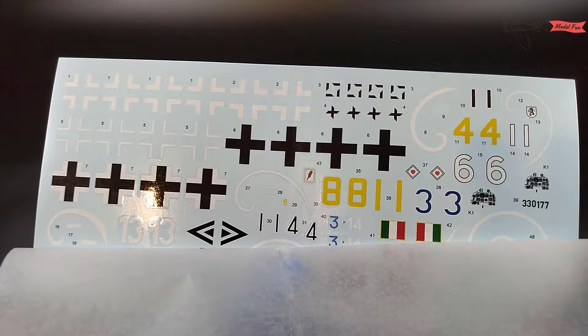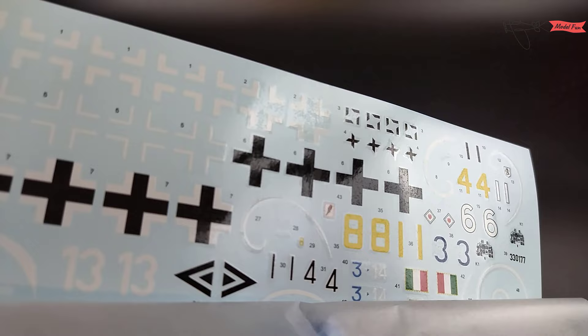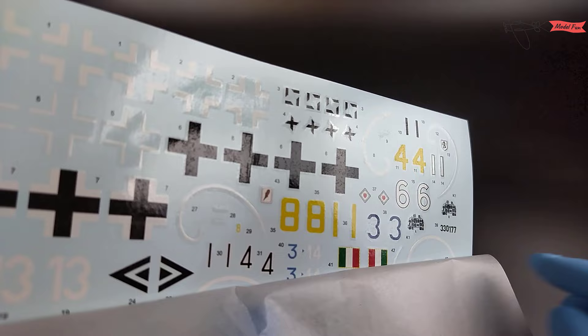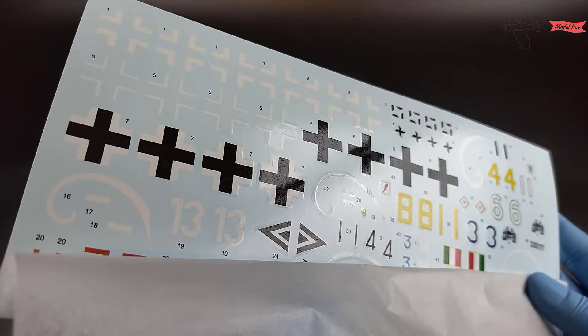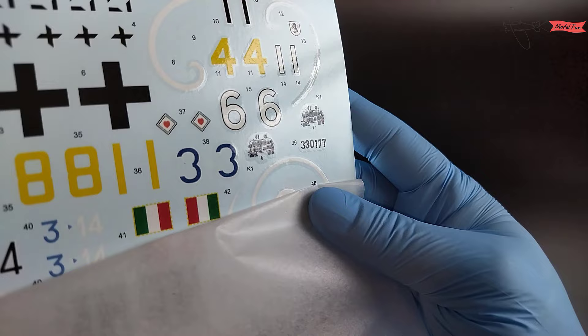Eduard decals, these are the ones where the carrier film can be removed after application. And as mentioned at the beginning of this video, common decals are doubled. So for the instrument panel we have two decals, crosses are doubled, swastikas are doubled. So optionally we can buy an Overtrees BF109 and build another model for less money.